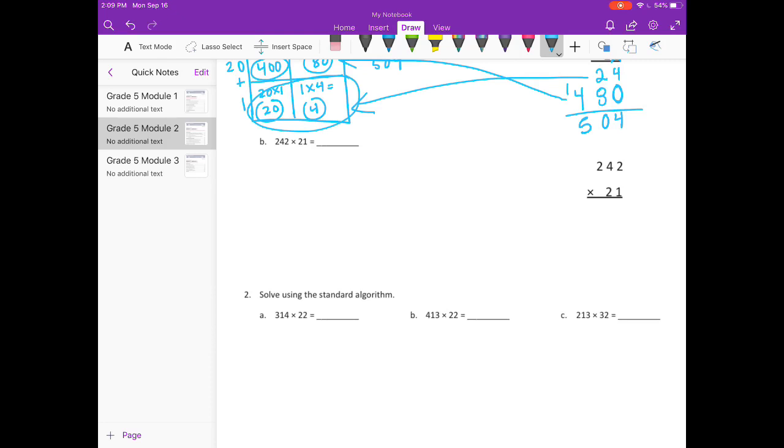242 times 21. So I know my area model is going to be 3 by 2. So I'll have 200 plus 40 plus 2 and 20 plus 1.